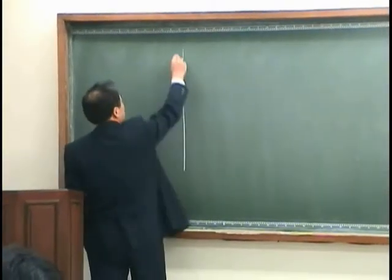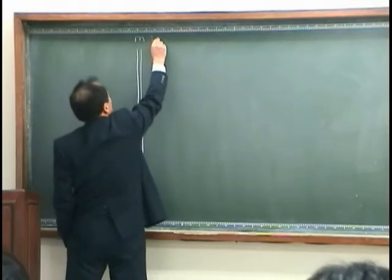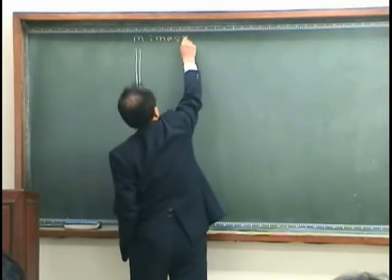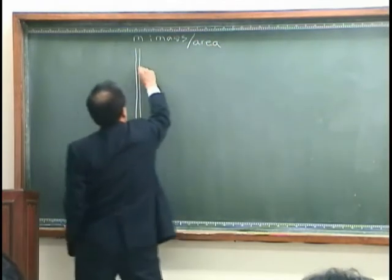Suppose we have a partition that has mass per unit length m, sorry, unit area, and we have stiffness.